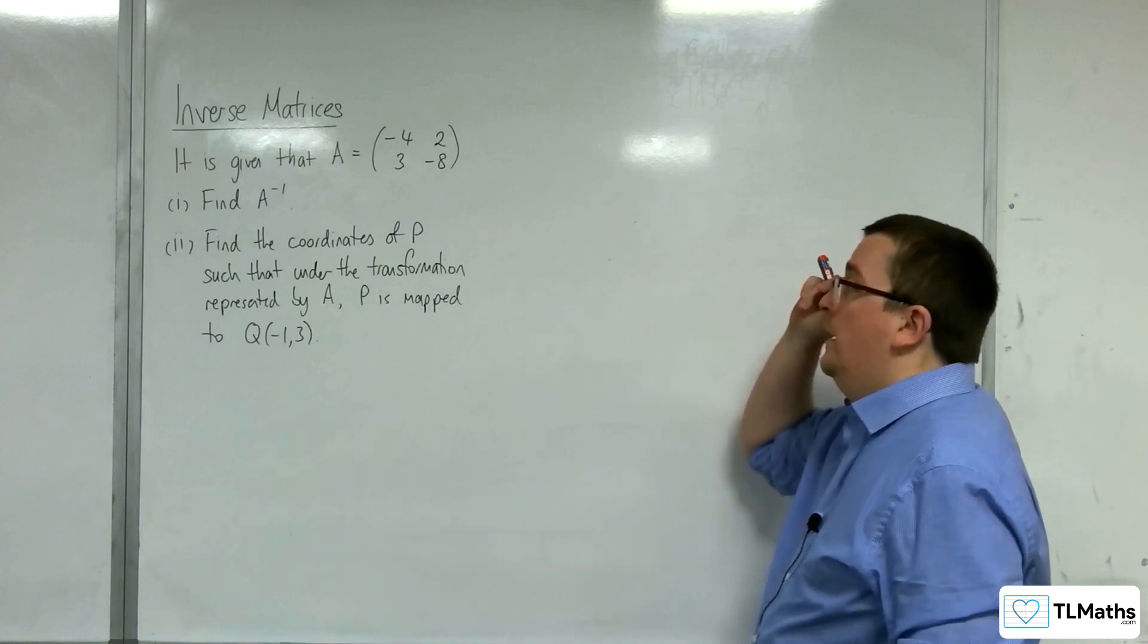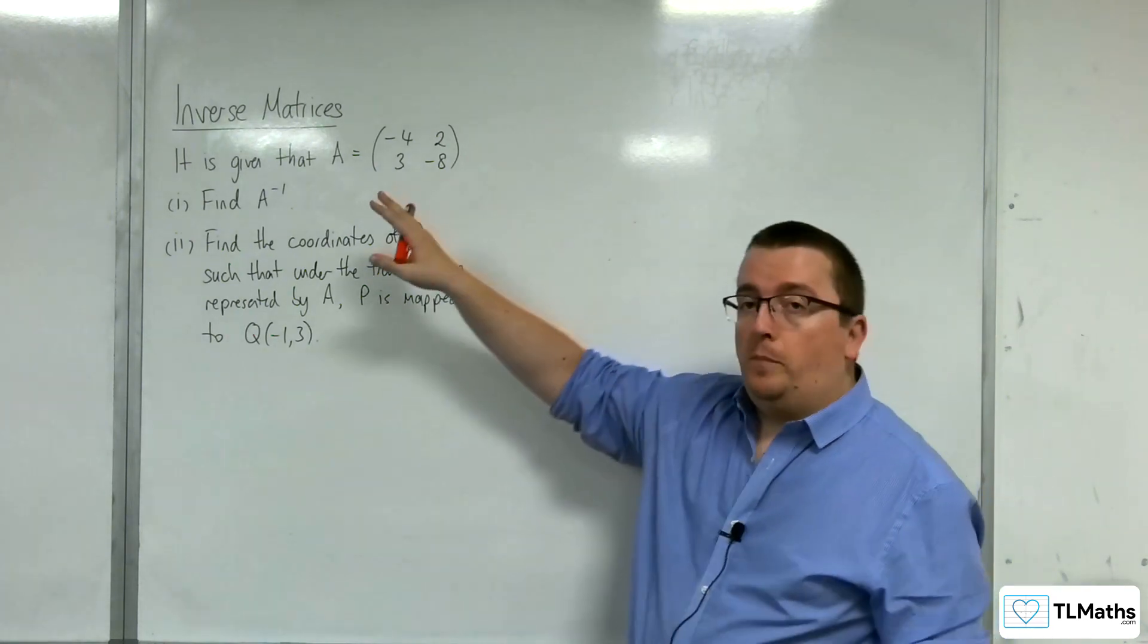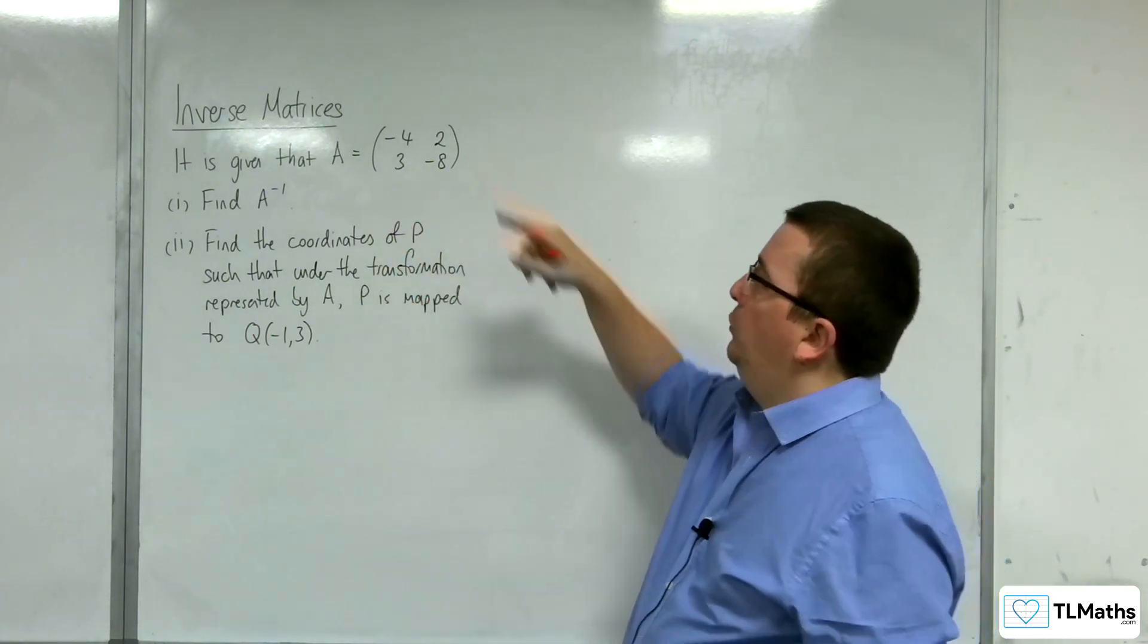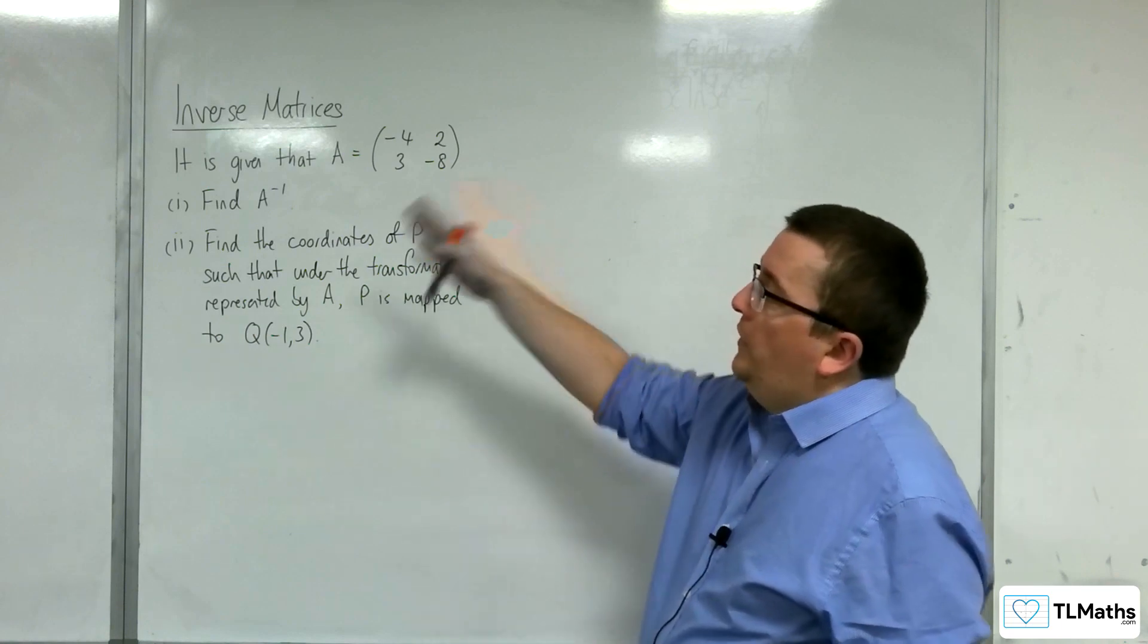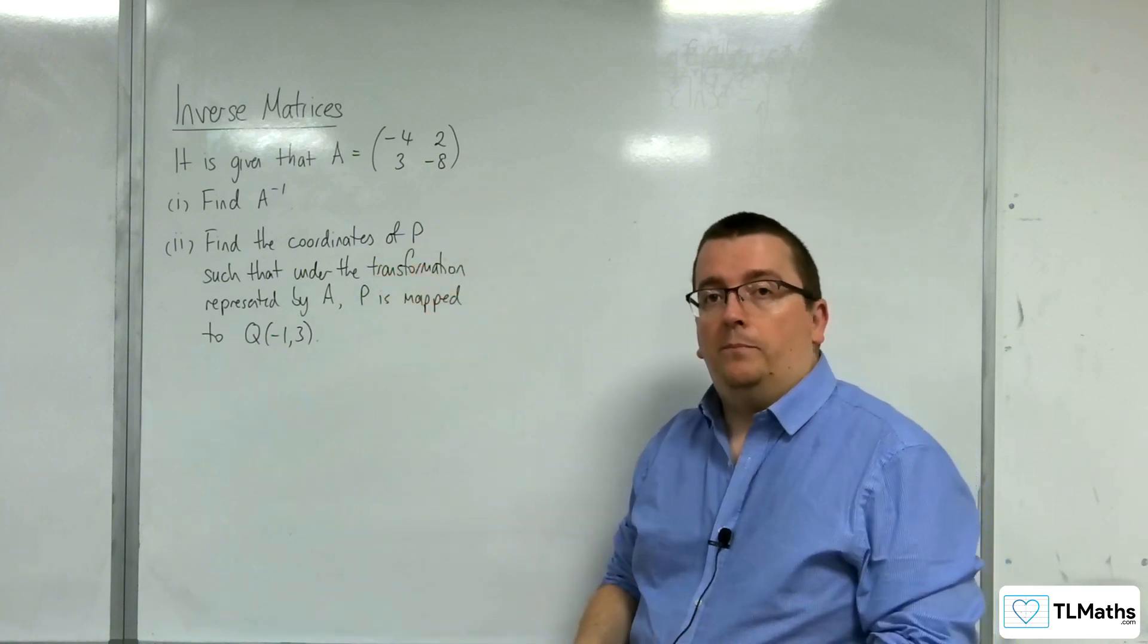In this video we have this problem. It is given that A is the 2 by 2 matrix with entries minus 4, 2, 3, minus 8. The first part is to find the inverse matrix A.